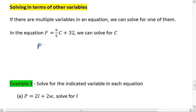So we take our equation F equals 9 fifths C plus 32. We want to start with the least complications. Start from the outside and work in. So we subtract 32 from both sides, which gives us 9 fifths C equals F minus 32.